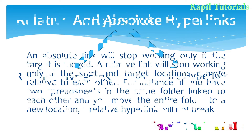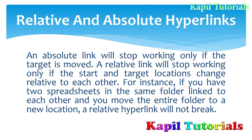According to definition, an absolute link will stop working only if the target is moved. A relative link will stop working only if the start and target locations change relative to each other. For instance, if you have two spreadsheets in the same folder linked to each other, and you move the entire folder to a new location, a relative hyperlink will not break.